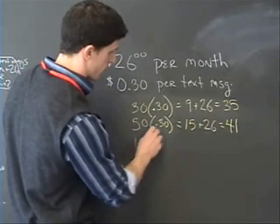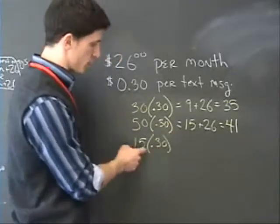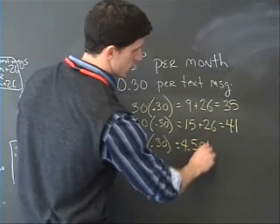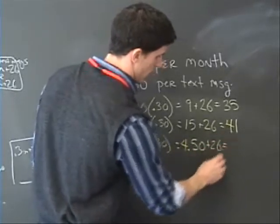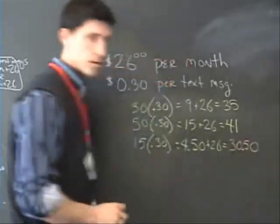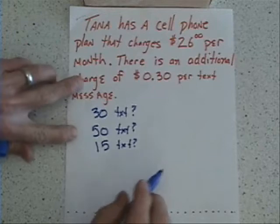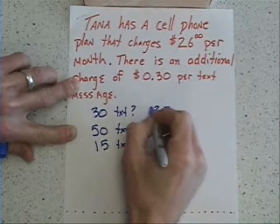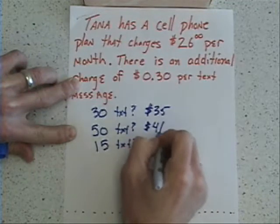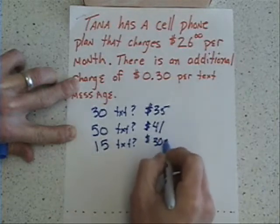And finally, if there were only 15 text messages at $0.30 a piece, multiplying these two values gives us only $4.50 worth of text messages. Add on the $26 for the phone service and we get $30.50. So 30 text messages cost $35, a 50 text message month costs $41, and 15 text messages would cost $30.50.